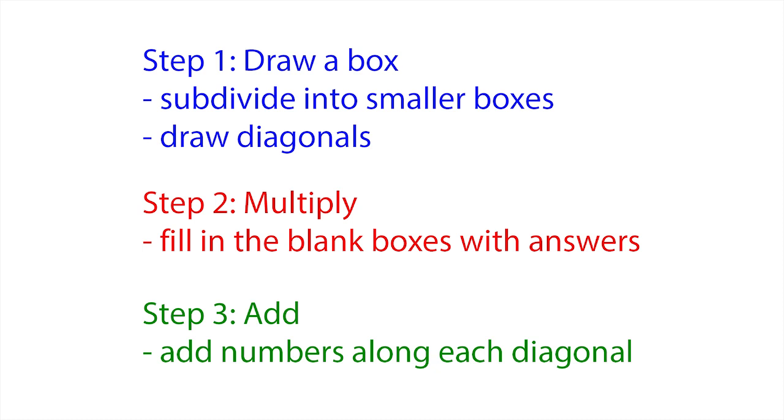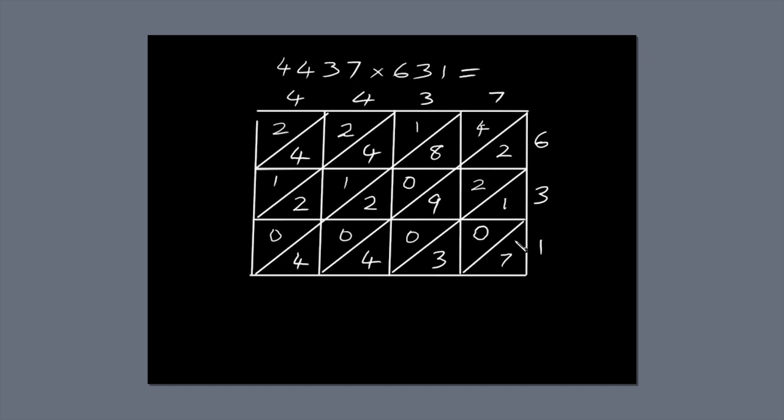Finally, we're going to add up the numbers along the diagonals. I'll circle each diagonal and show you what I mean. The first diagonal only has one number, 7, so write 7 directly below the diagonal. The next diagonal has three numbers: 1, 0 and 3. 1 plus 3 is 4. Write 4 below the diagonal.